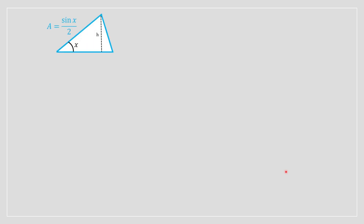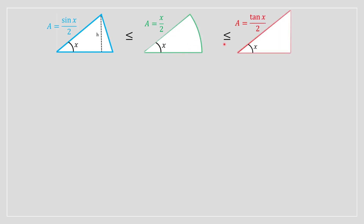So we've created our three triangles. Now we apply the squeeze theorem to the areas of all three. The blue triangle is the smallest, the green (sector) is intermediate, and the red triangle is the largest. We can manipulate this inequality to get it looking like sin(x) divided by x, and that's the reason we used these three triangles.